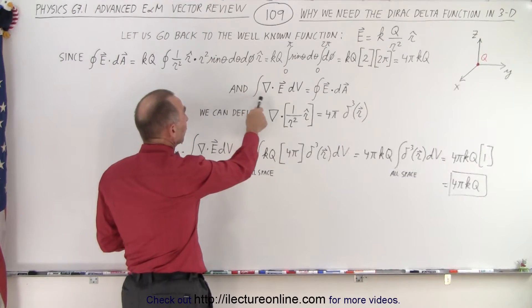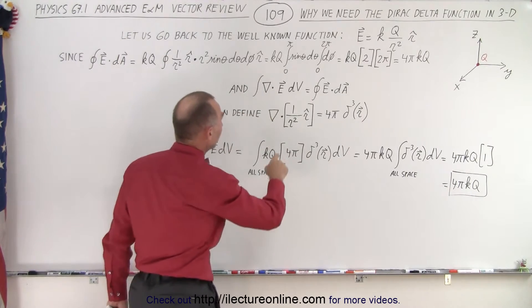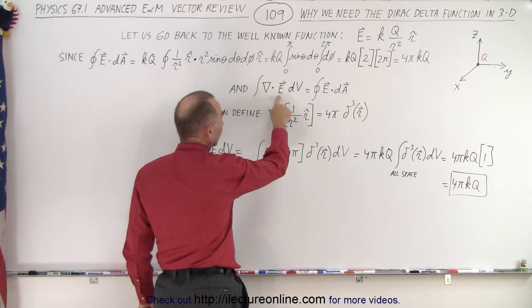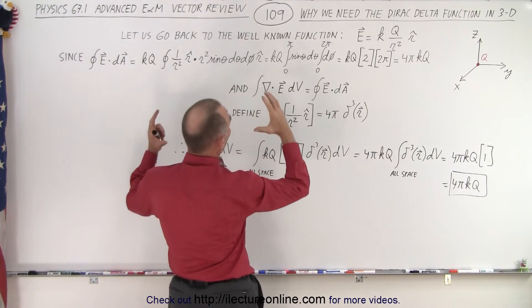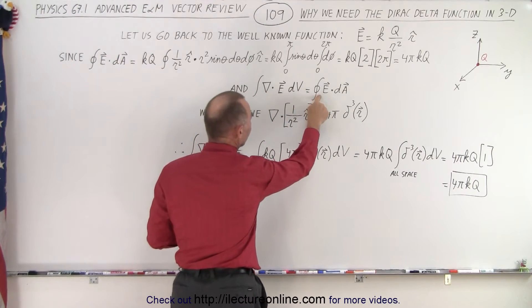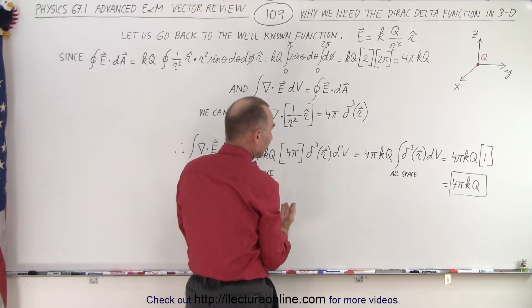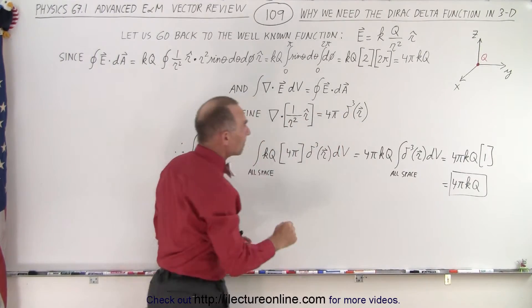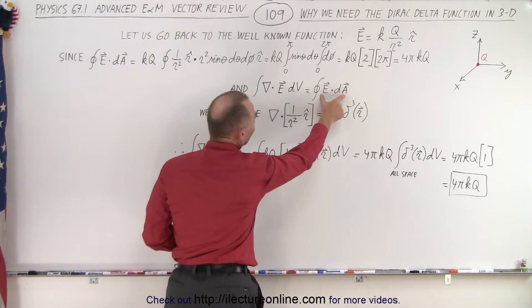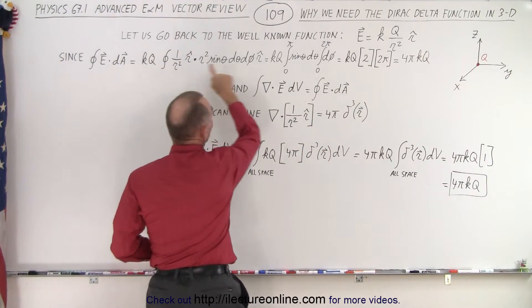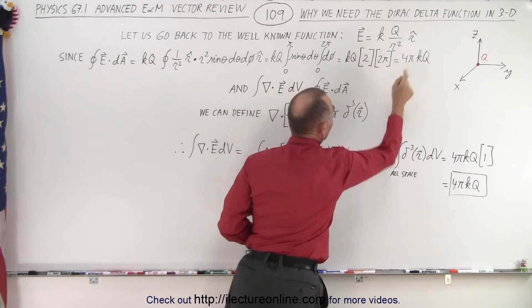First of all we remember the theorem here where the gradient of the electric field dV integrated over the volume equals the surface integral of the electric field at some Gaussian surface away from the origin times dA. And of course we already saw that this quantity right here was equal to 4π times k times q.